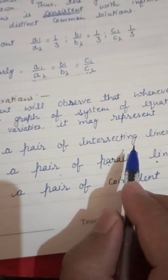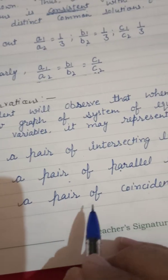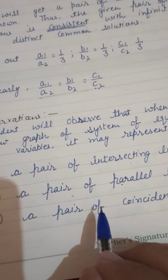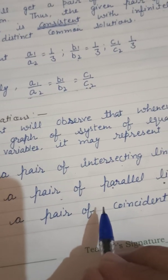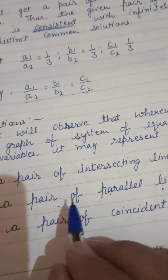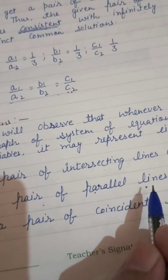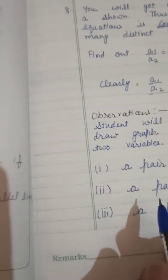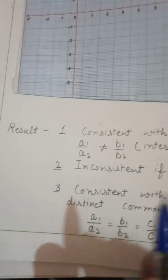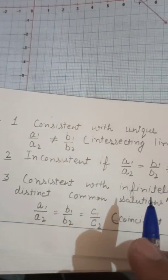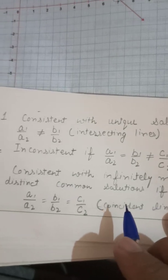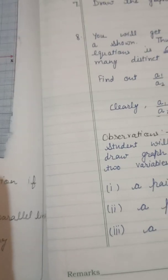From all these activities, we observe that a pair of intersecting lines and a pair of coincident lines both result in consistent equations. If the pair of equations forms parallel lines, it is inconsistent. We write this result on the plane side as well. That's about Activity 3 — thank you and have a nice day.